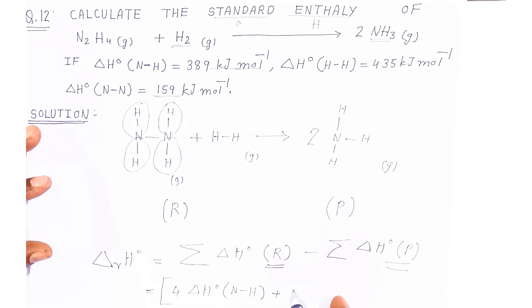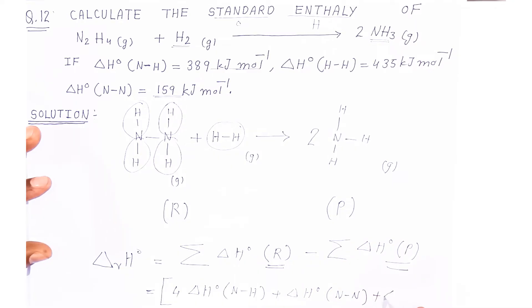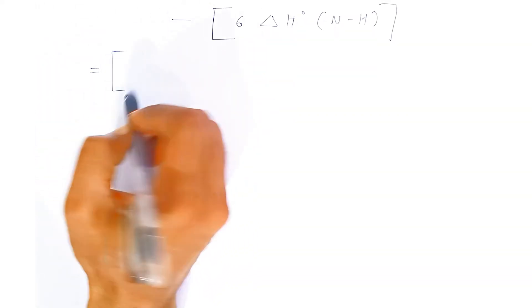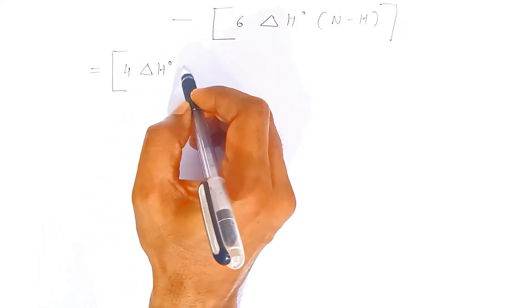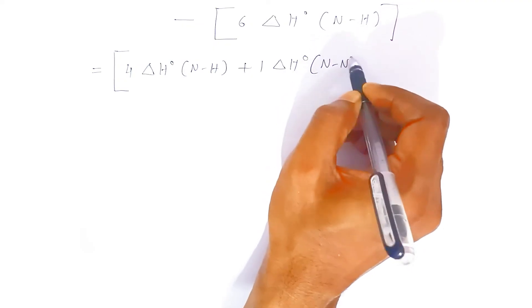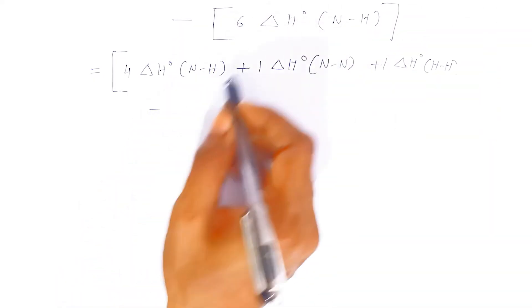The full reactant side expression is: 4 × ΔH°(N–H) + 1 × ΔH°(N–N) + 1 × ΔH°(H–H). On the product side, we subtract six N–H bond enthalpies: minus 6 × ΔH°(N–H).